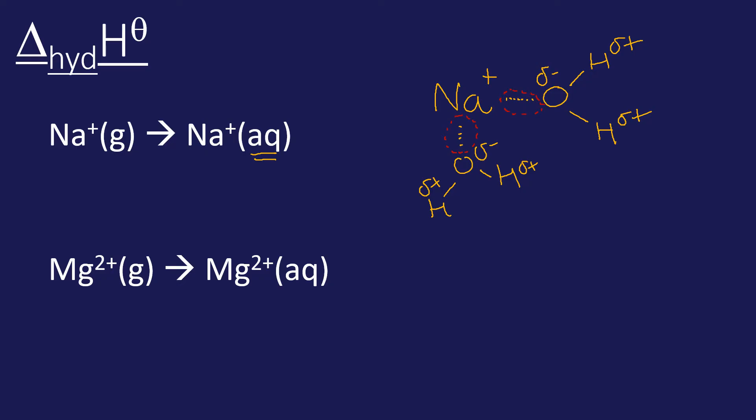If we were to compare magnesium and sodium, it would be a very similar scenario. I'll only draw one water molecule. We're forming very similar bonds here between the polar water and the positive ion. Now because we're forming bonds, bond forming is exothermic, so I'm predicting that both of these values will be negative. Delta H will be negative in both cases because in both cases bonds are being formed.